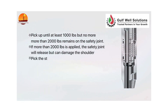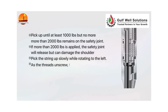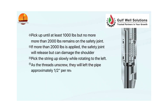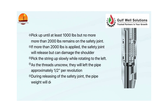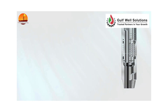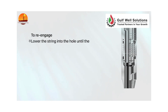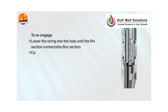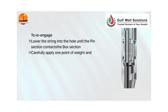Pick the string up slowly while rotating to the left. As the threads unscrew, they will lift the pipe approximately half inch per revolution. During releasing of the safety joint, the pipe weight will decrease. To re-engage: lower the string into the hole until the pin section contacts the box section, then carefully apply one point of weight and rotate slowly to the right.